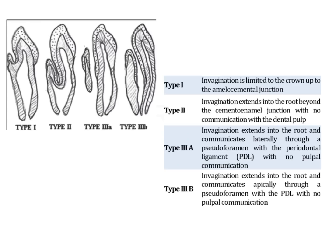Oehler's classification is very important when reading about dens invaginatus because he was the one who classified dens invaginatus based on the extent to which the invagination is present.